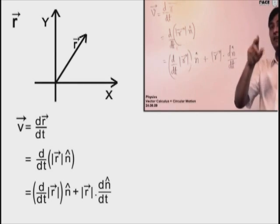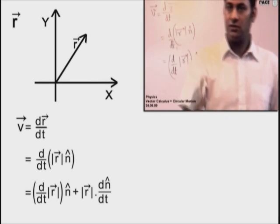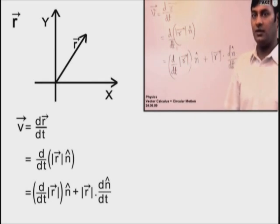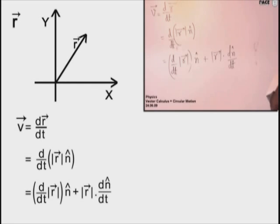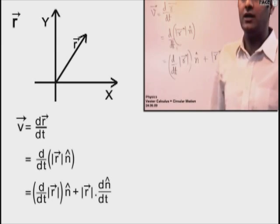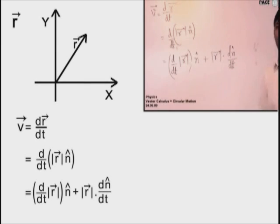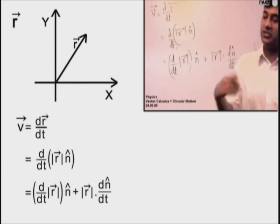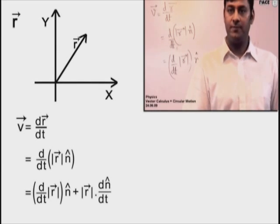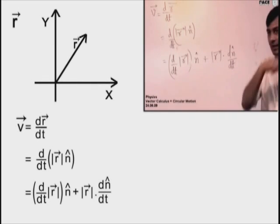Now, dn̂/dt is a vector. Its magnitude might seem to be 1, but no — the unit vector is not constant. The position vector itself is not constant, so how can a unit vector in its direction be constant? The magnitude of the unit vector is 1, but its direction can vary.